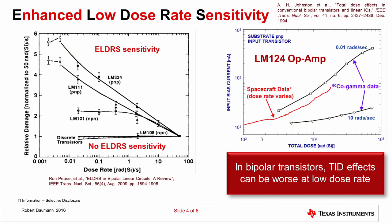One thing to be aware of is that the total dose effect in bipolar transistors is very frequently dose rate sensitive. The rate at which the radiation is applied changes the sensitivity of the device. It's counterintuitive because at lower dose rates you actually get an enhanced effect — hence we call this the Enhanced Low Dose Rate Sensitivity, or ELDRS. This is a problem for accelerated testing, where we want to use a high dose rate to complete the test quickly. Because of ELDRS, particularly for bipolar junction transistors, we have to determine whether a technology has ELDRS sensitivity. If it does, we cannot use high dose rate testing and must use extremely low dose rate testing to validate the worst-case device shift.